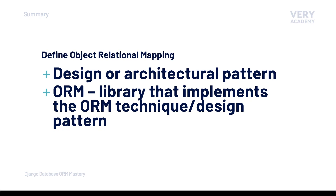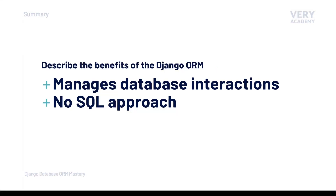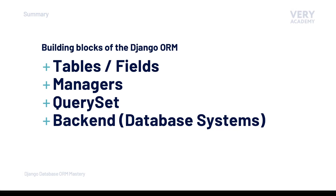To summarize: ORM, or object-relational mapping, is a design or architectural pattern. When we say ORM, we are normally referring to a library that implements the ORM technique — like the Django ORM or SQLAlchemy. The main benefits of the Django ORM are that it manages database interactions and provides a no-SQL approach, allowing developers to remain in Python. The Django ORM breaks down into four building blocks: tables and fields, managers, query sets, and backends — which we'll cover in the next tutorials before mastering the full Django ORM toolkit.